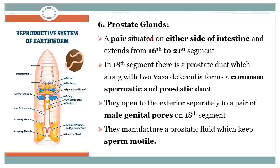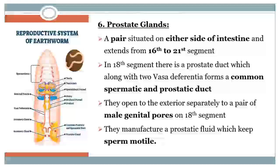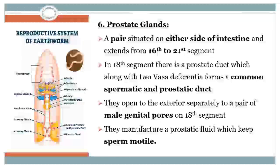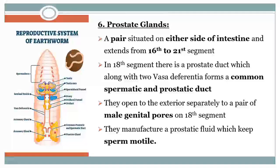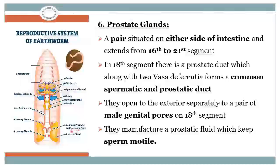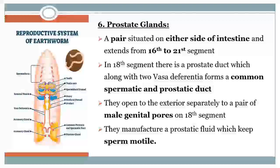The next point is the prostate gland. A pair of glands present on either side of the intestine from segments 16 to 21 are the prostate gland. The prostate gland consists of a number of ducts that join with the two vasa differentia to form the common prostatic and spermatic duct, and that common prostatic and spermatic duct opens into the male genital pore in the 18th segment. These prostatic glands secrete the prostatic fluid which helps to make the sperm motile.